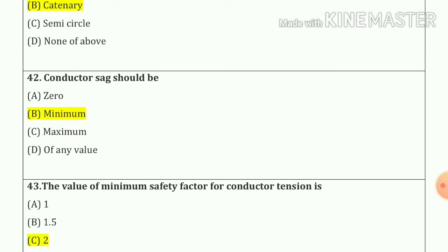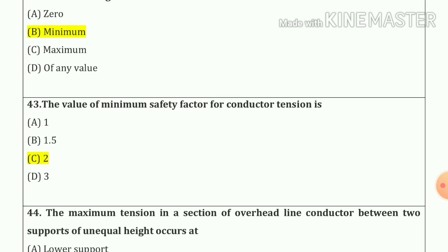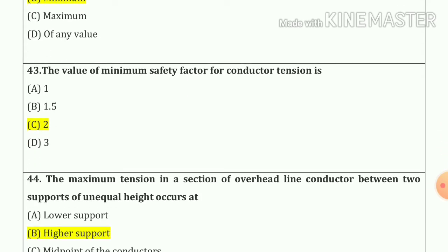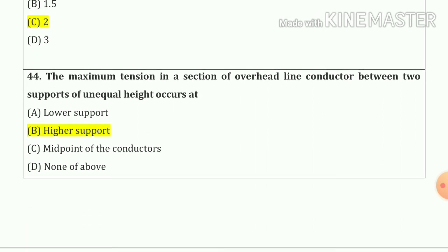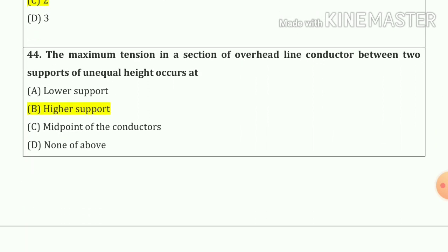Question number 42: conductor sag should be minimum — option number B. Question number 43: the value of minimum safety factor for conductor tension is 2 — option number C.